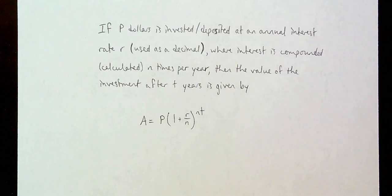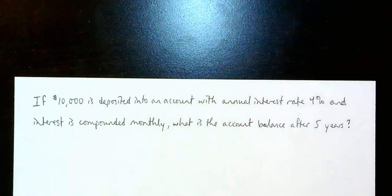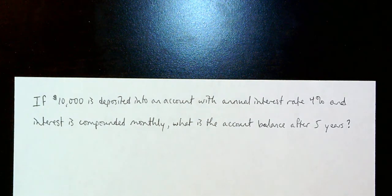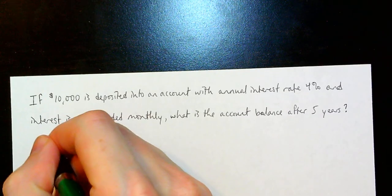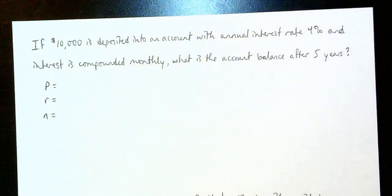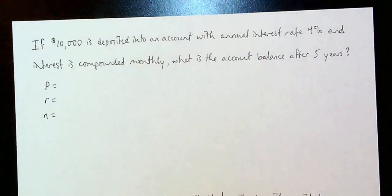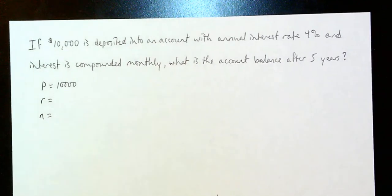Let's see a quick sample of how this formula gets used. If $10,000 is deposited into an account that has an annual interest rate of 4% and interest is compounded monthly, what is the account balance going to be after 5 years? Let's identify the key pieces of information. P is how much we put in to start with — it says we're depositing $10,000, so P equals $10,000.